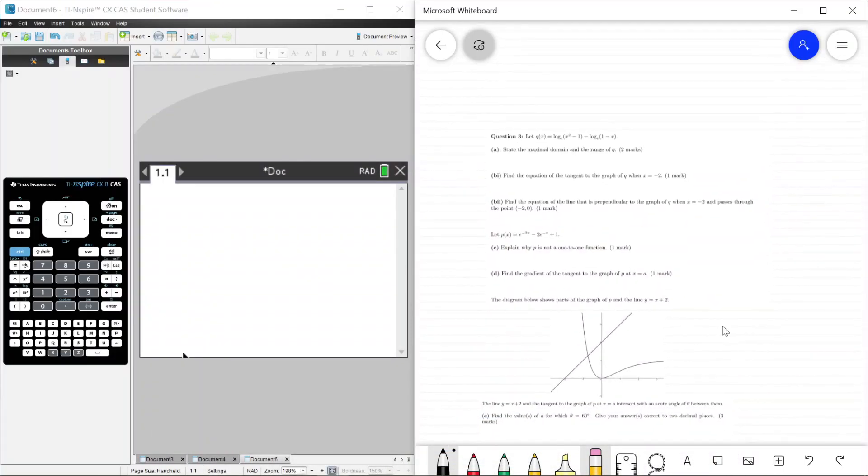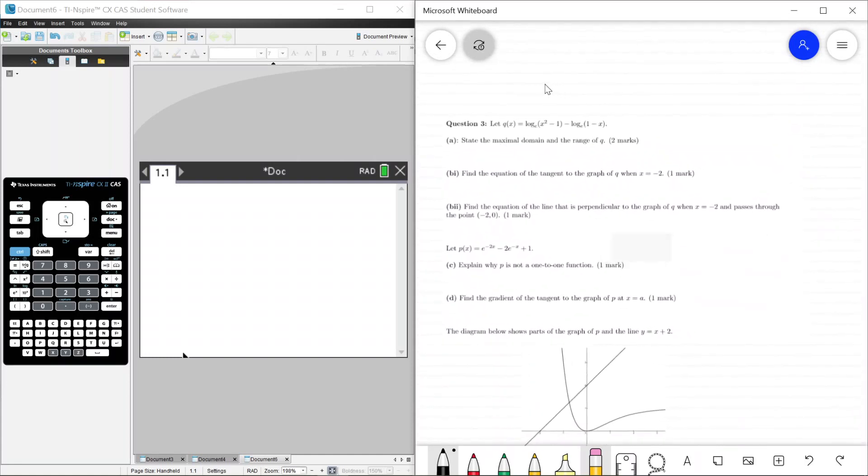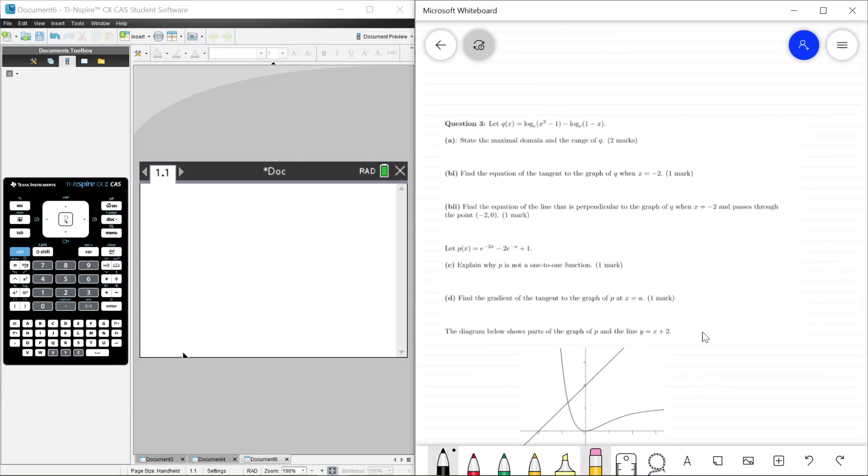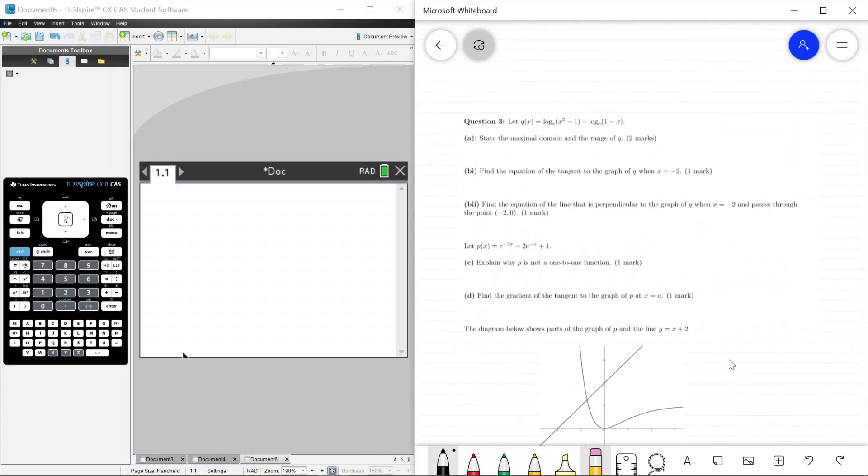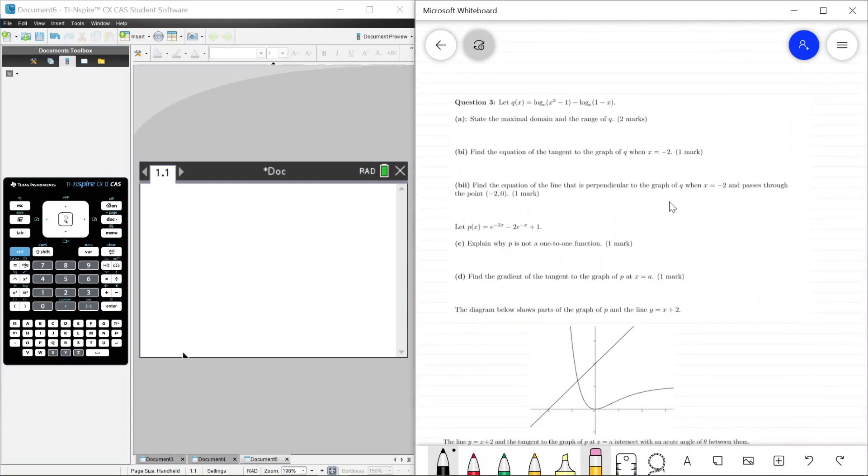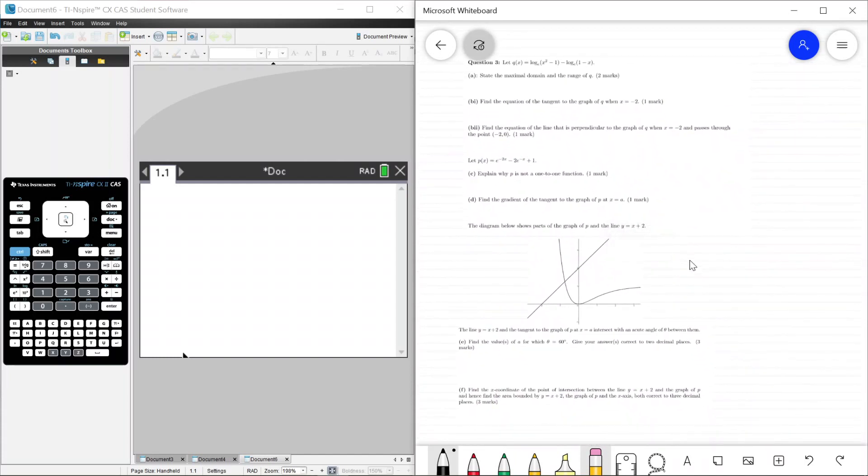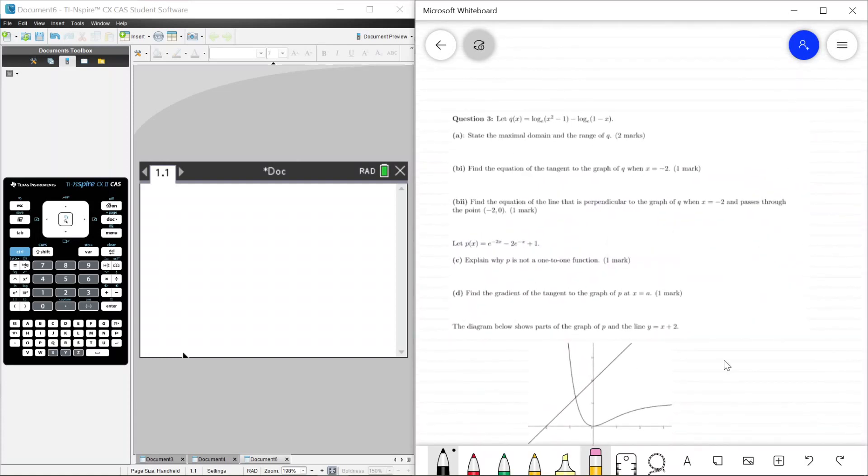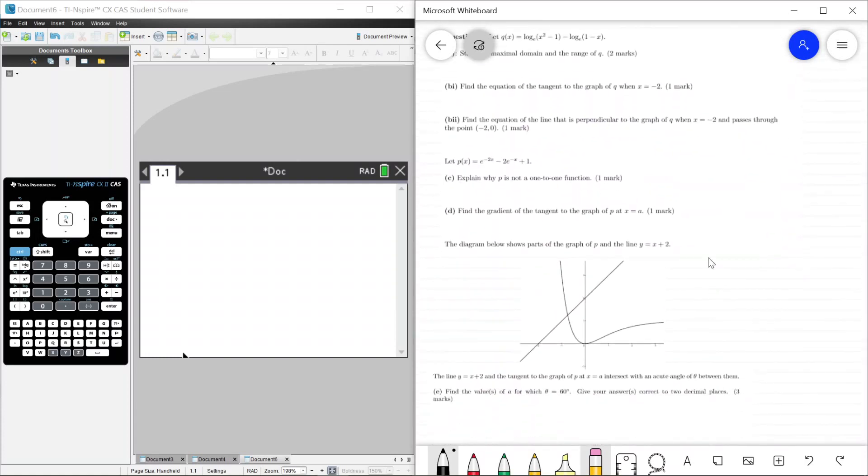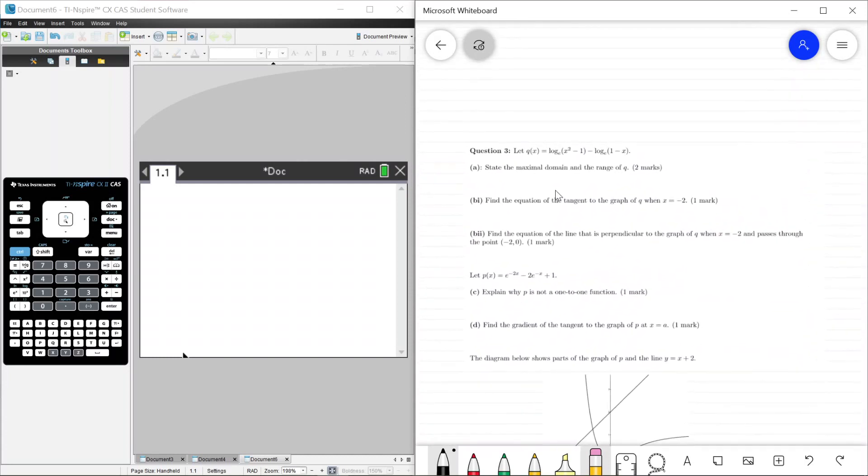Greetings everybody, so today we're going to be taking a look at the 2021 Methods Exam 2, specifically question 3 from Extended Response. I picked this one out because I thought it was quite a nice question, quite interesting as well towards the end here. I don't have the actual test paper or copy with me, so if you do have your hands on the PDF copy, please put that in the comments below, put a link somewhere. Let's just jump right into it.